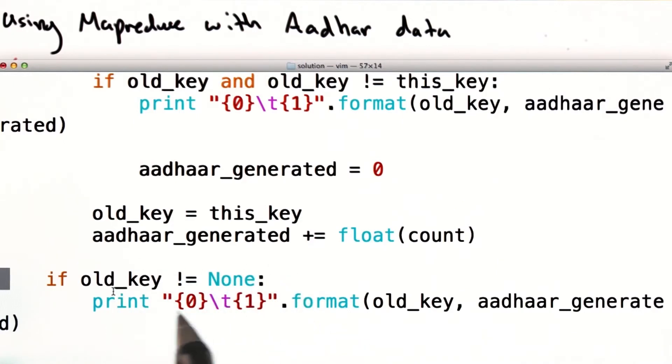We include this last if clause for the last key in our data. Because there's no next key after the last key, if we didn't have this, we would not emit a key value pair for the final key in our intermediate data. So here, after we've done all this other processing up here, we just say for the last key, hey, let's make sure that we emit the key value pair.